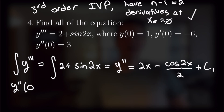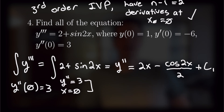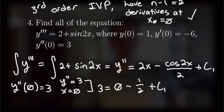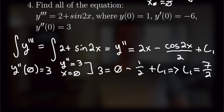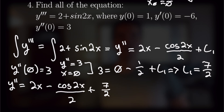From the initial condition y double prime at x equals 0 equals 3, we substitute: 3 equals 0 minus cosine(0) over 2 plus c1, which gives 3 equals negative 1 half plus c1, so c1 equals 7 over 2. Plugging that in, y double prime equals 2x minus cosine of 2x over 2 plus 7 over 2. That allows us to take another antiderivative.